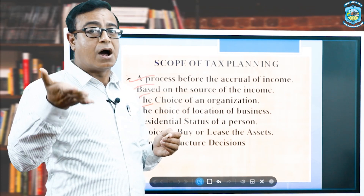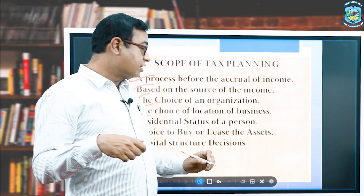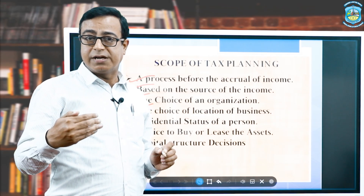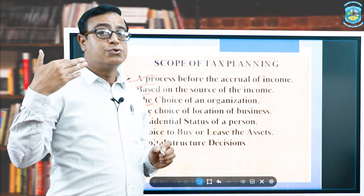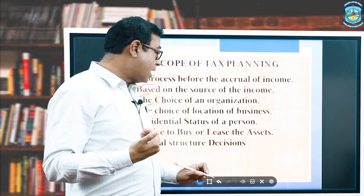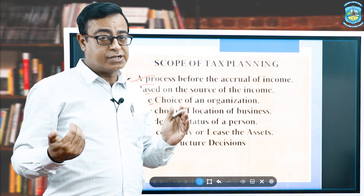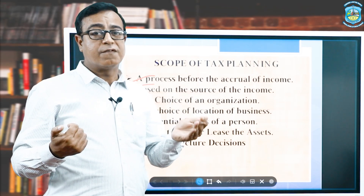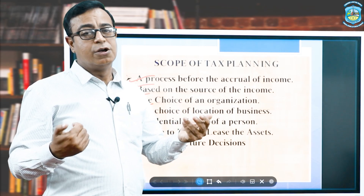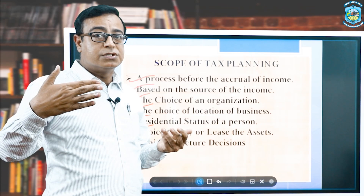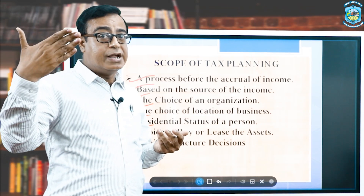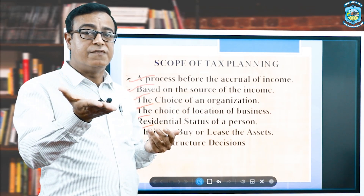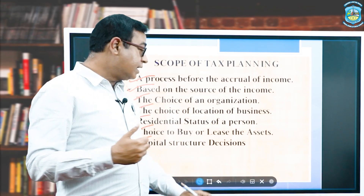The residential status of a person also matters when calculating total income, so tax planning involves considering residential status to save tax. Tax planning also includes the choice to buy or lease an asset. When purchasing a fixed asset involving a huge cost, we can either buy it outright or take it on rent. Using the rules of depreciation, interest cost, and rent, we can decide which option is more beneficial.